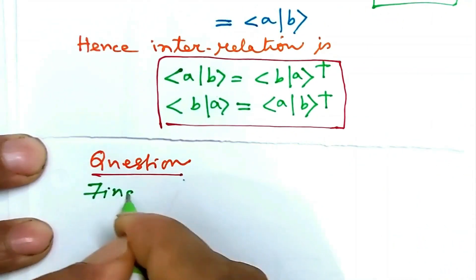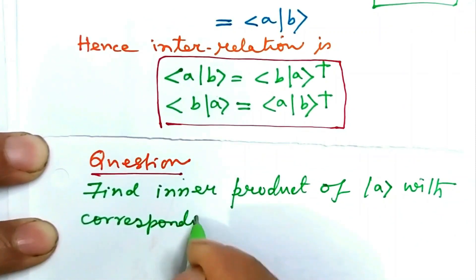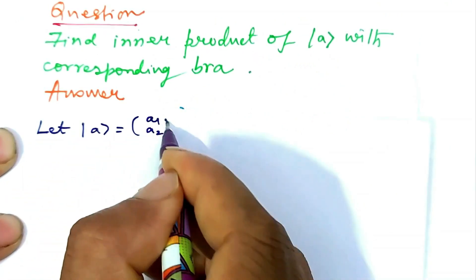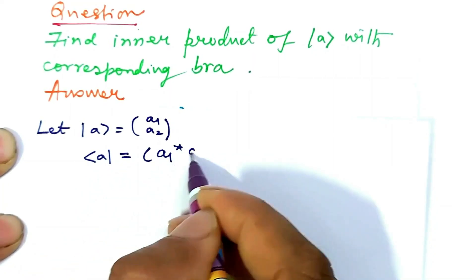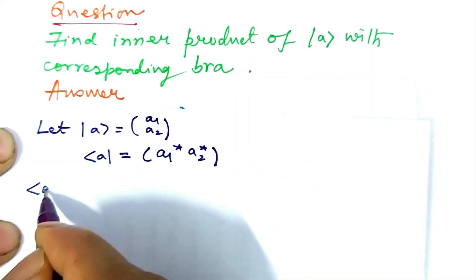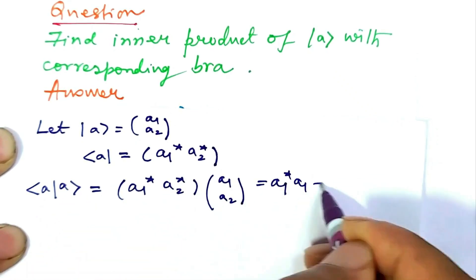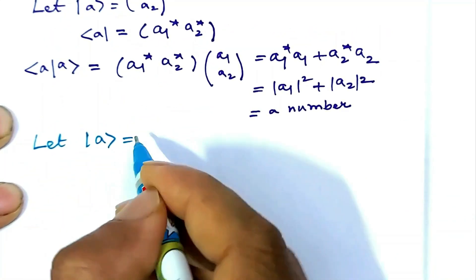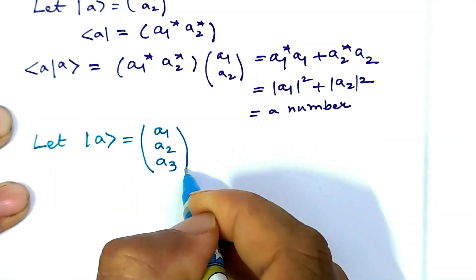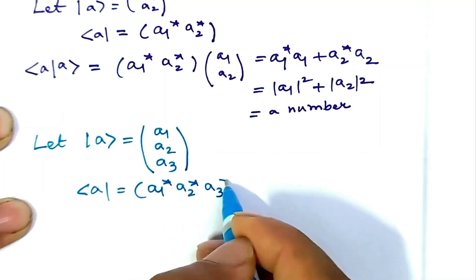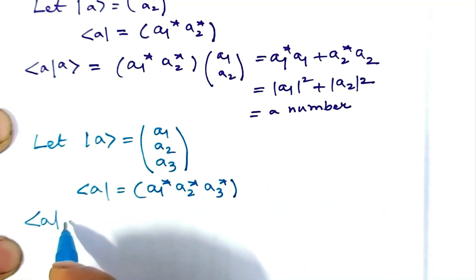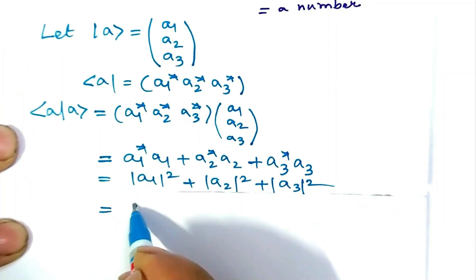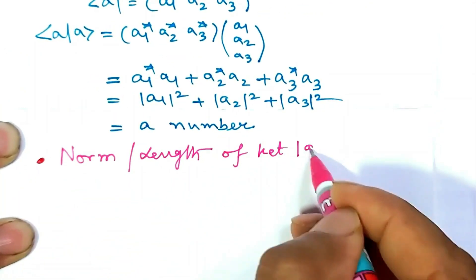Next question: find the inner product of ket A with its corresponding bra. If ket A is the column matrix (a1, a2, a3), then the inner product bra A ket A is a1*·a1 + a2*·a2 + a3*·a3 = |a1|² + |a2|² + |a3|², which is a number. Let us now discuss the norm or length of a ket.